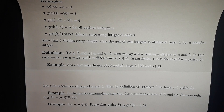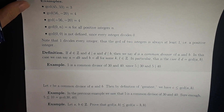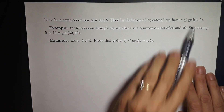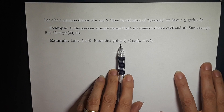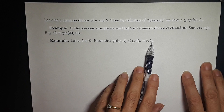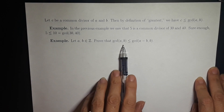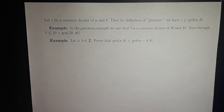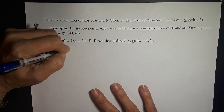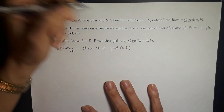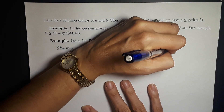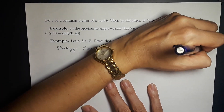Now for a basic proof example: let a and b be integers. We want to prove that the GCD of a and b is less than or equal to the GCD of a minus b and b. Our strategy is to show that the GCD of a and b is a common divisor of a minus b and b, and then by the handy fact we will know the desired inequality.